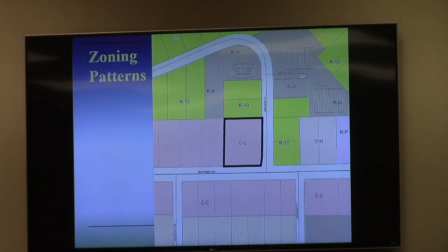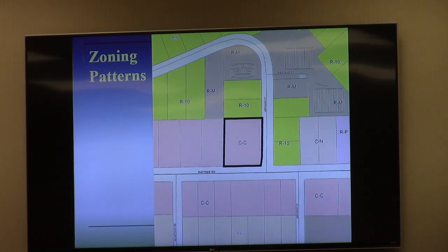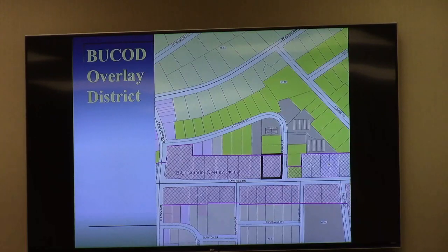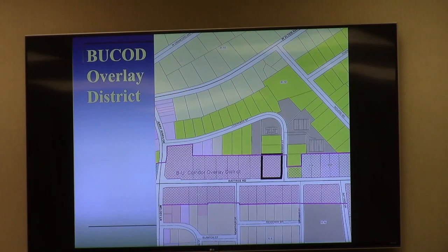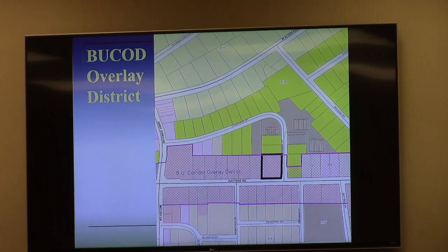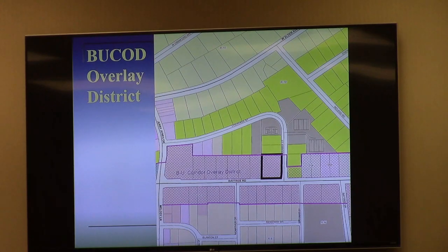The zoning pattern, as you see, is a lot of CC zoning and a few other zoning districts along Bay Tree. Particularly westward from here, you see more of a commercial pattern. The Overlay District Map is also in your packet, and that describes the corridor of properties facing Bay Tree Road. It's subject to the rules of the overlay, which is mainly architectural standards and some site development standards.